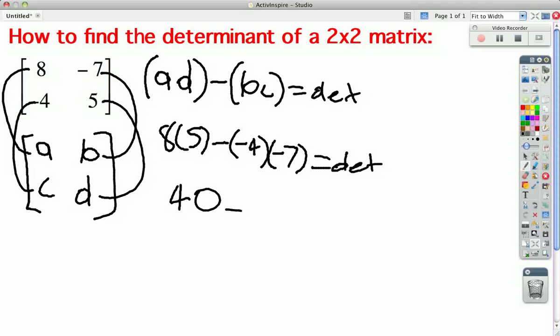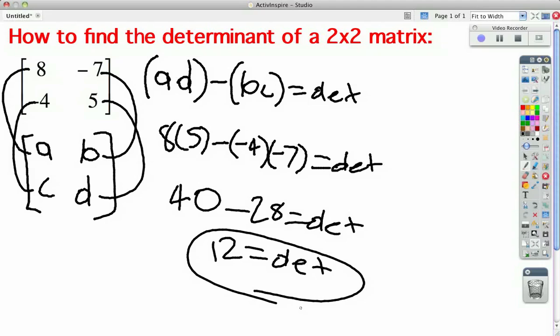40 minus 28 equals determinant, and 12 is your determinant. And that's how you get the determinant. Thank you.